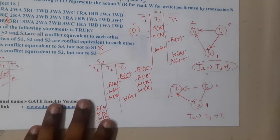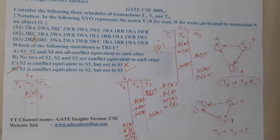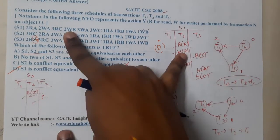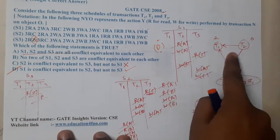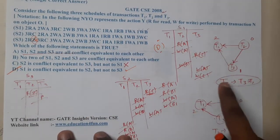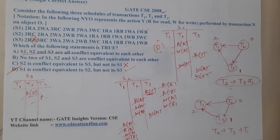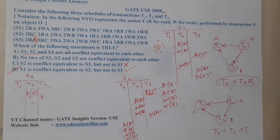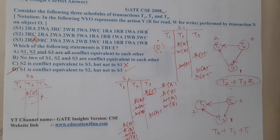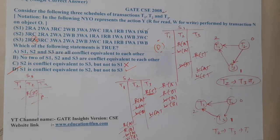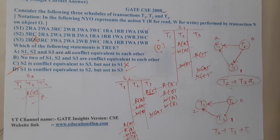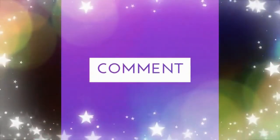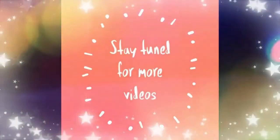I hope everyone got a clear idea. The key steps are: carefully converting the schedule to a transaction list, drawing the precedence graph, and identifying the serial order. That is the only thing the examiner wants to test. In the next lecture let us continue with the next question. Thank you — like, share, and subscribe for more awesome videos like this.